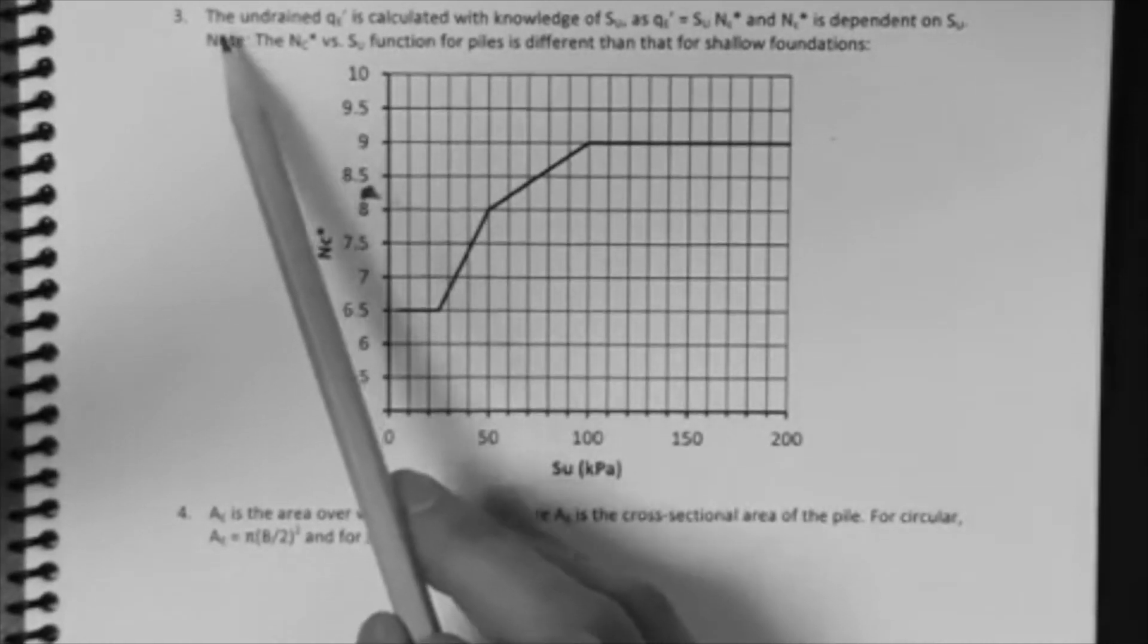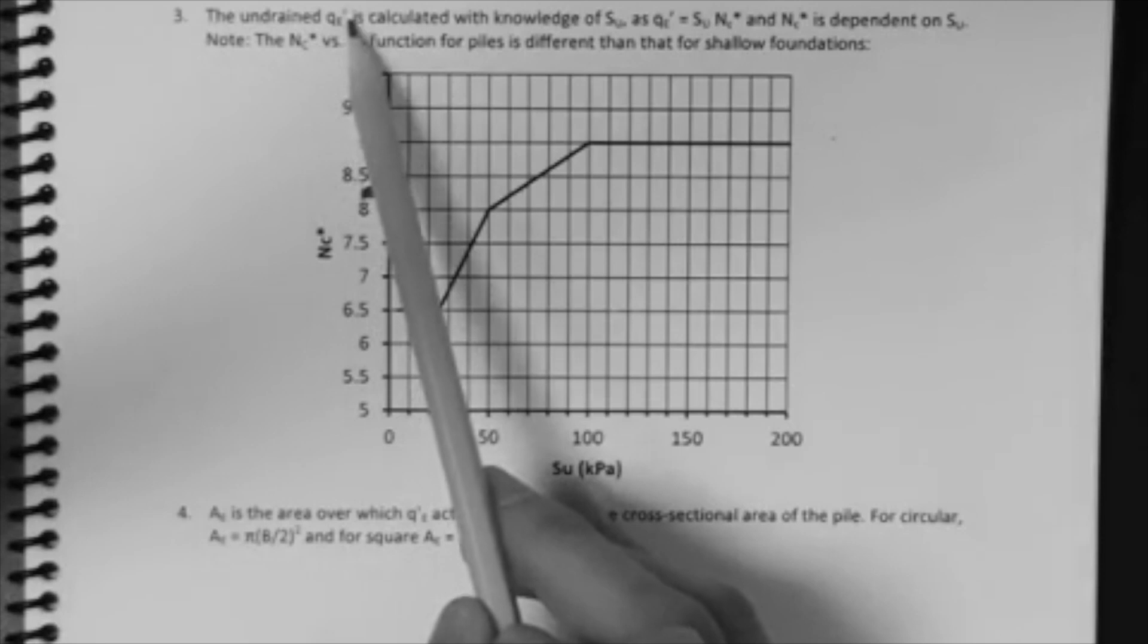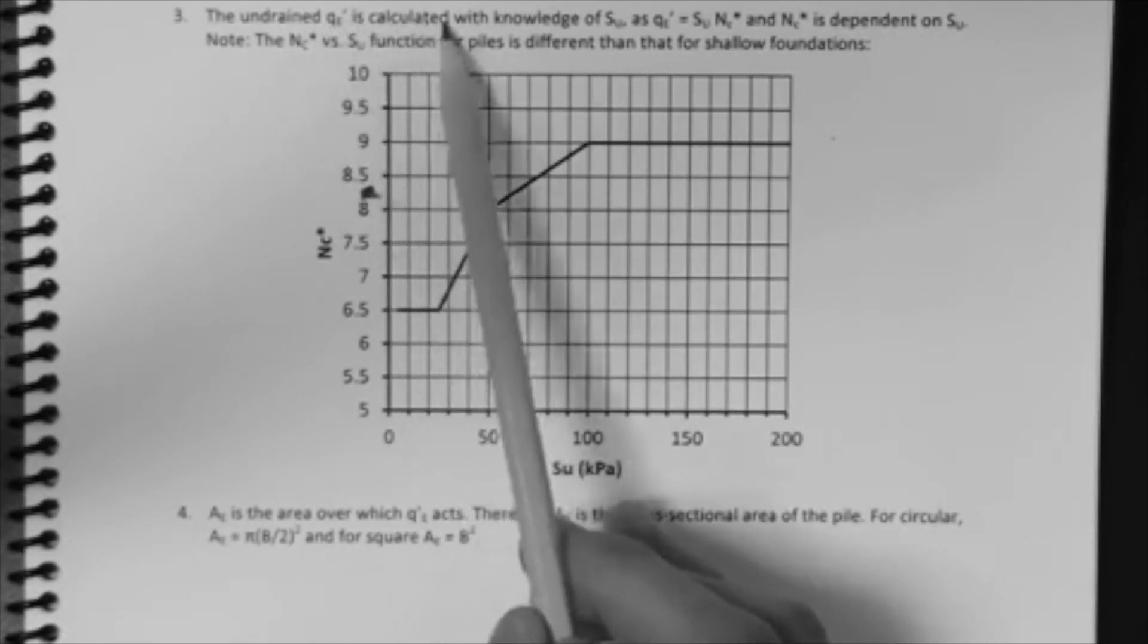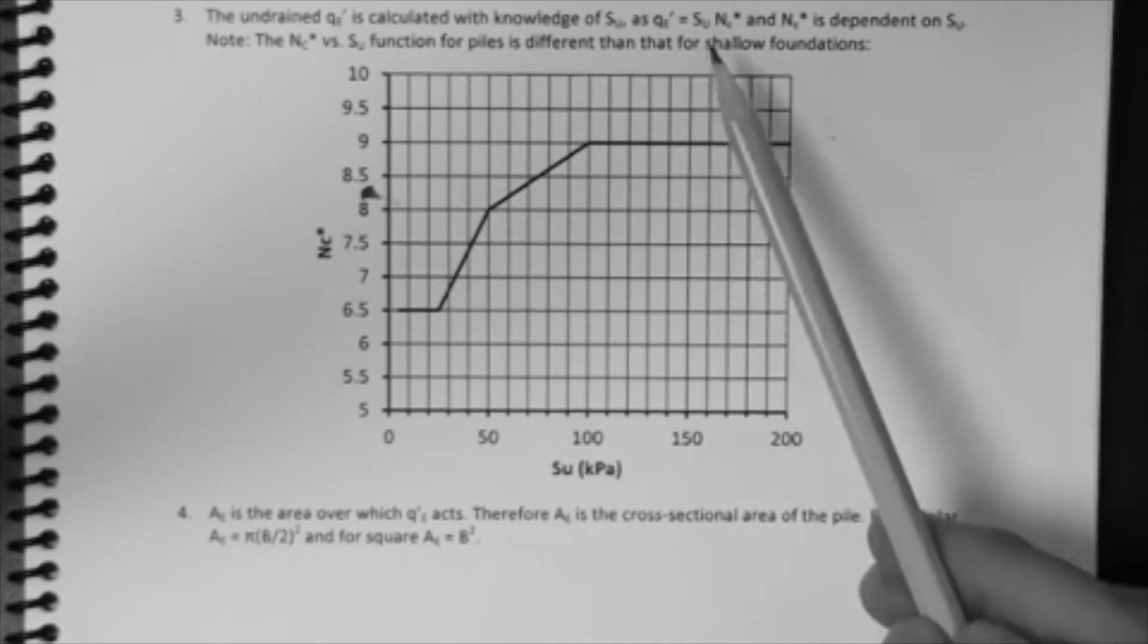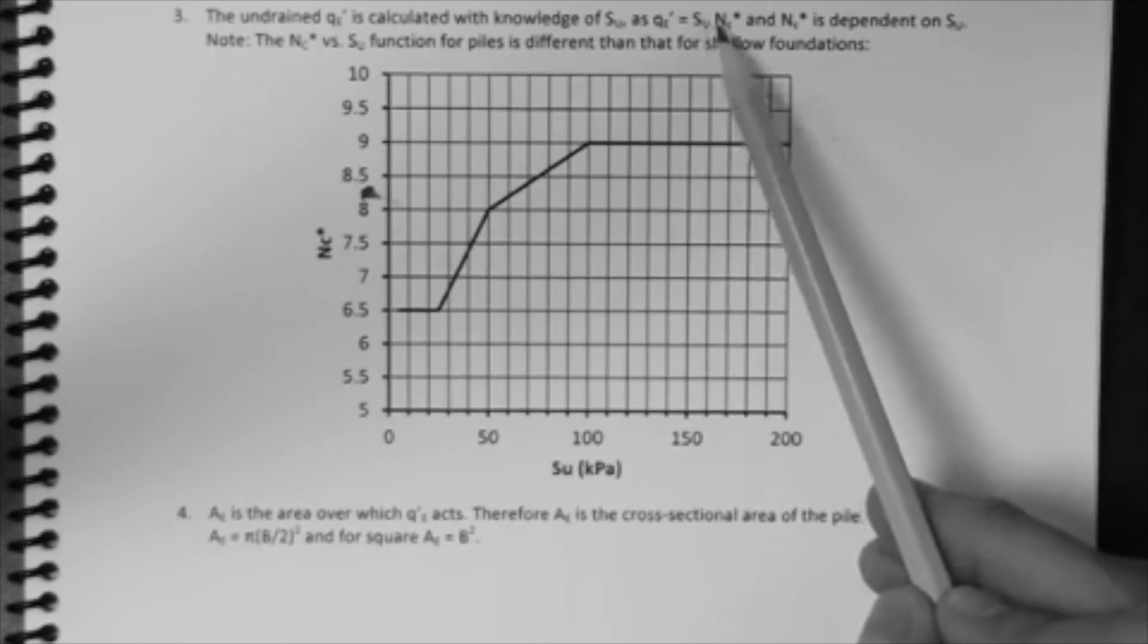You can see here that it says the undrained Qe and bearing resistance is calculated with knowledge of Su, as Qe is Su·Nc*. And Nc* is dependent on Su. So, it's very similar to the alpha method, in the sense that you multiply the Su times some parameter that is dependent on the Su. In this case, it's called Nc*.